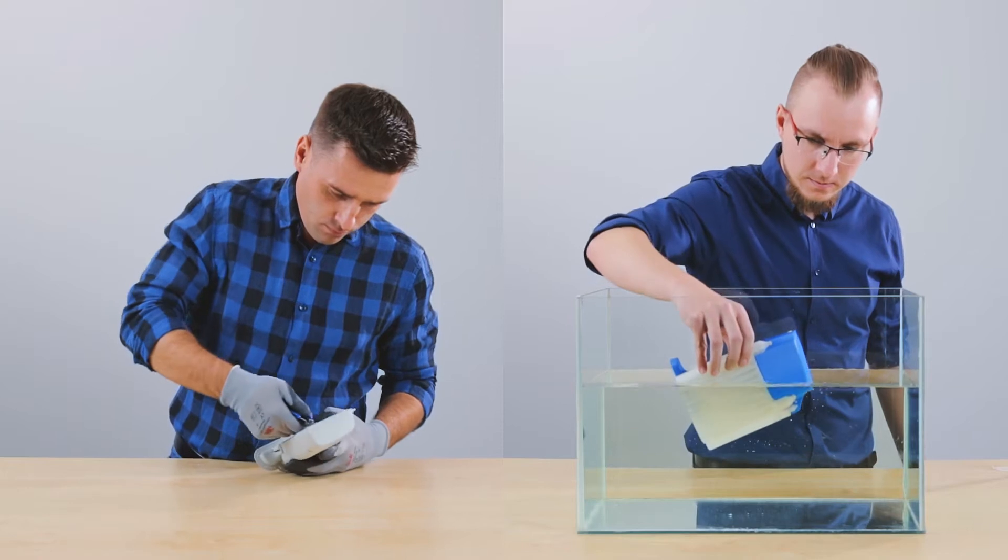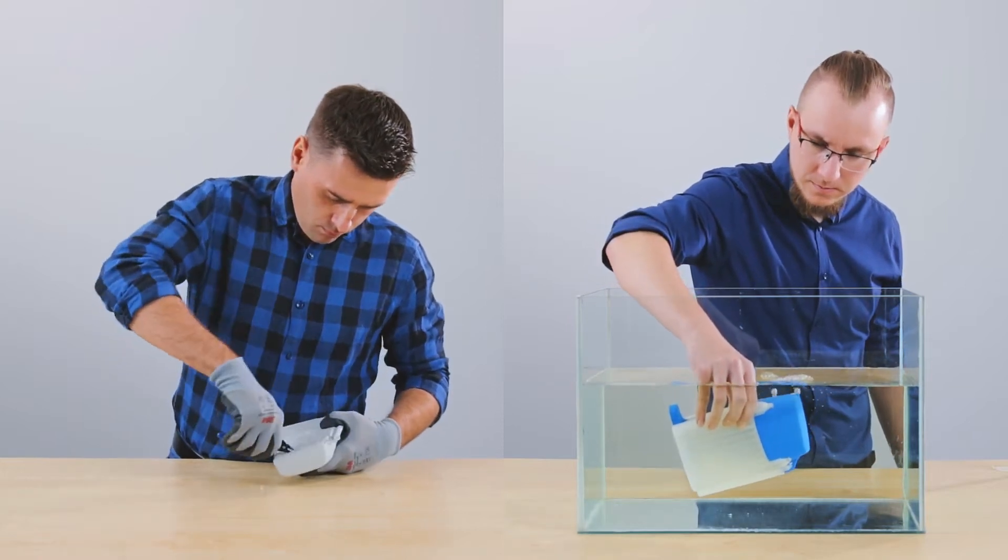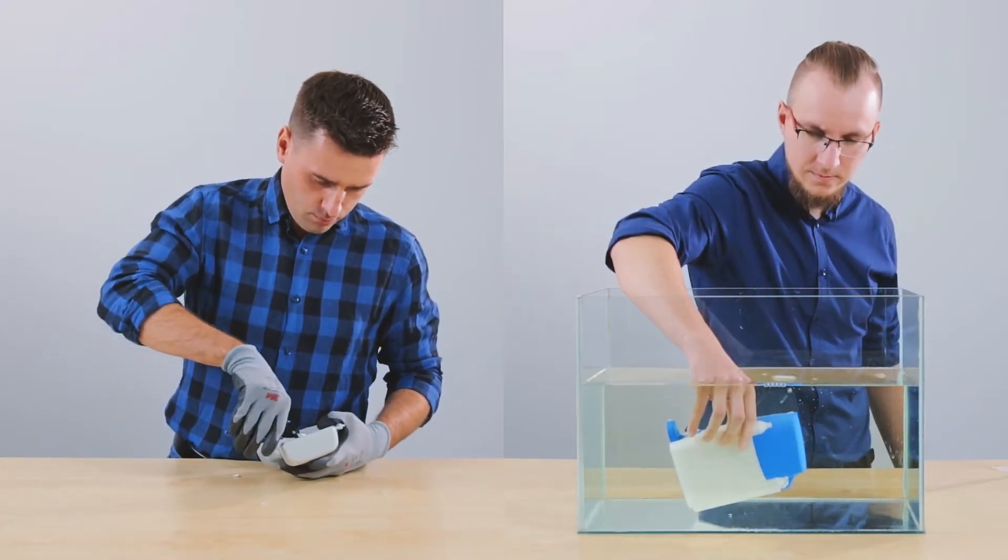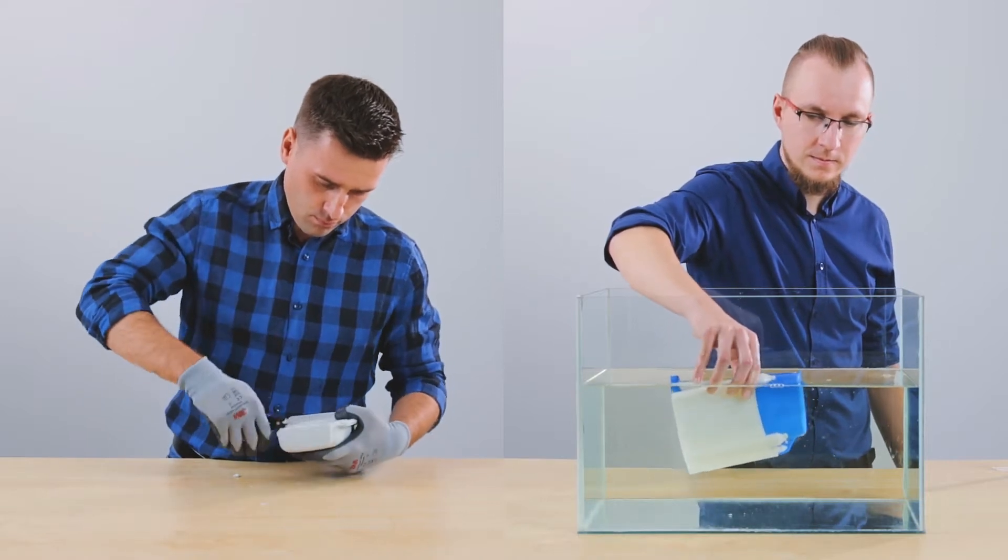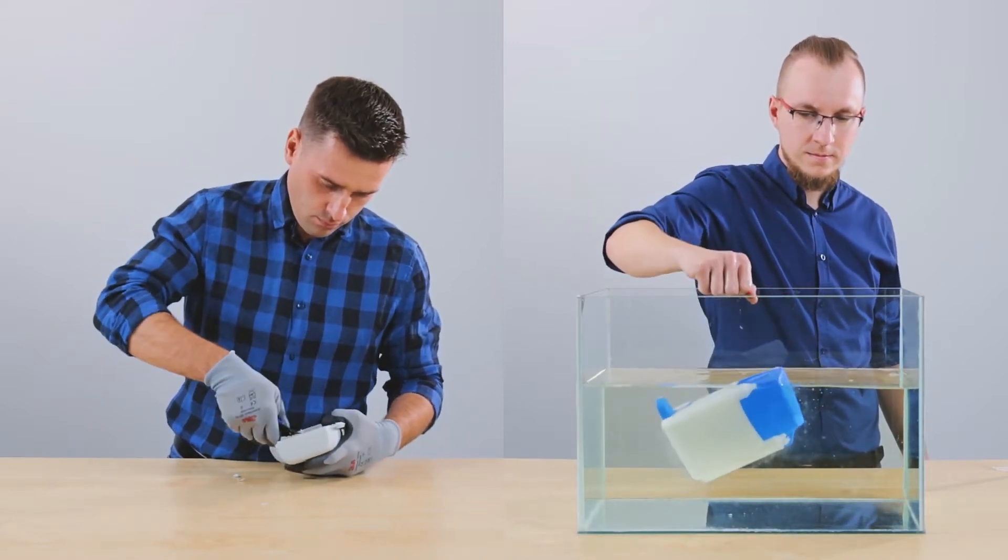Simon, on the left, used a traditional 3D printer which prints the supports and the model with the same material. Michael, on the right, chose a 3D printer working in dual-extrusion technology.